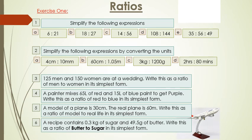A model of a plane is 30 centimetres. The real plane is 60 metres. Write this as a ratio of a model to real life in its simplest form. And number 6, a recipe contains 0.3 kilogramme of sugar and 49.5 grammes of butter. Write this as a ratio of butter to sugar in its simplest form.